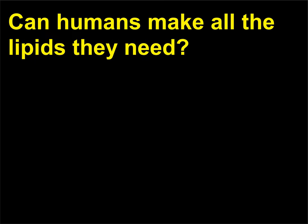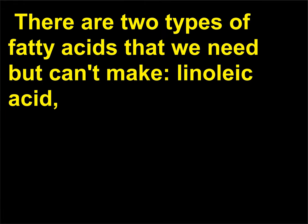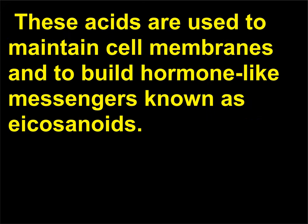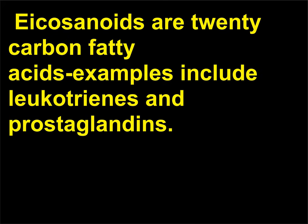Can humans make all the lipids they need? No. There are two types of fatty acids that we need but can't make: linoleic acid, an omega-6 fatty acid, and linolenic acid, which is also known as an omega-3 fatty acid. These acids are used to maintain cell membranes and to build hormone-like messengers known as eicosanoids. Eicosanoids are 20-carbon fatty acids; examples include leukotrienes and prostaglandins.